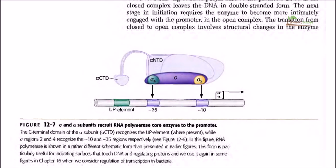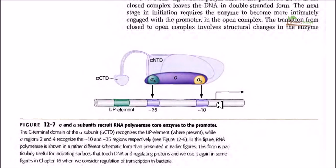If this is the transcription start site, then 10 nucleotides upstream and 35 nucleotides upstream we find two regions: one is the TATA box (TATAAT sequence) and another is the TTGACA sequence. These sequences are very specific for binding with this polymerase. The polymerase cannot initiate transcription unless it binds and recognizes the promoter sequence.